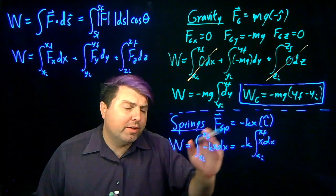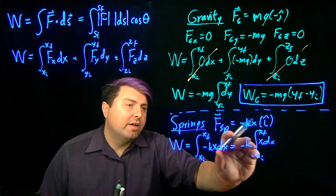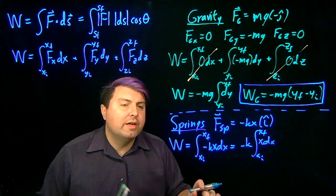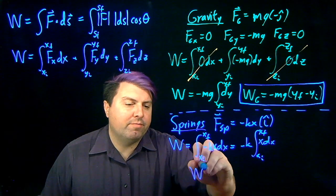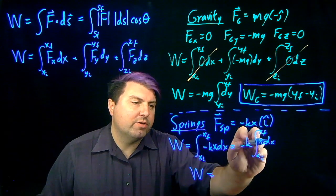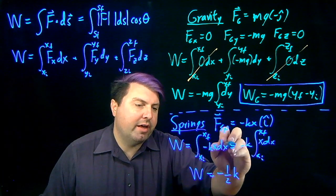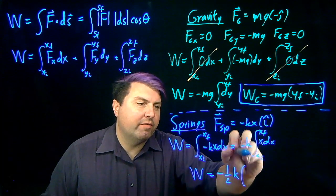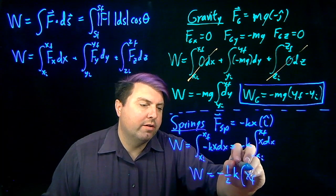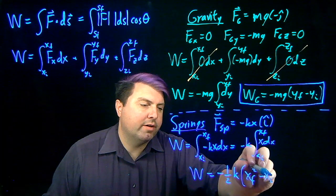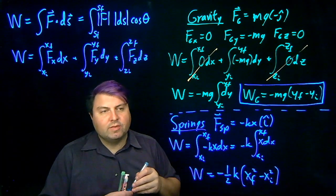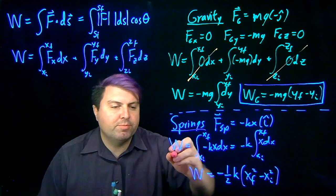This integral, hopefully, is one of the first and few that you've done. Integral of x dx should be x squared over 2. And then we just need to evaluate it from its initial and final states. So I will pull the 2 out to be a 1 half. We still have our k. We still have our negative. And then we have x squared final minus x squared initial. And that is our work from springs.